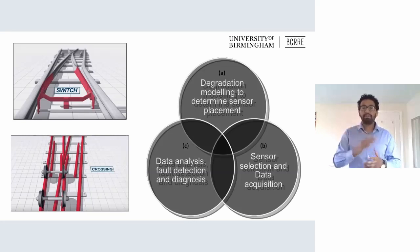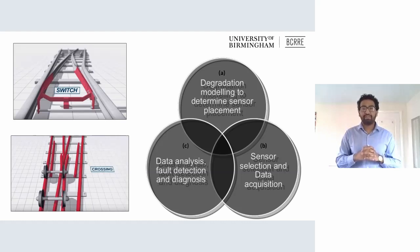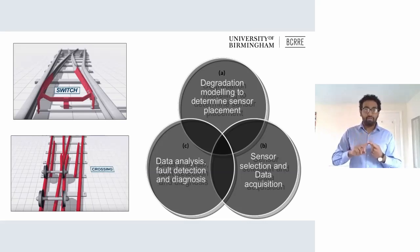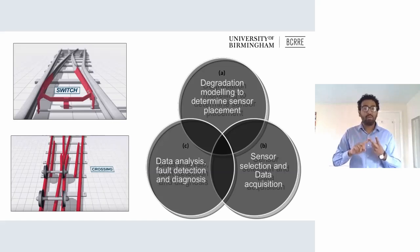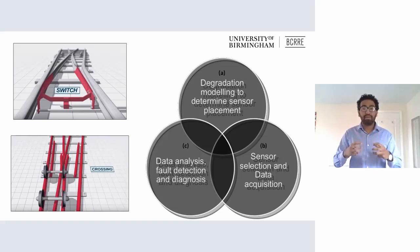As you can see on the Venn diagram on my slide, my research comprises three different aspects. The first aspect is to carry out numerical simulation of vehicle and track in order to determine the placement of sensors on them. The second is to choose the highest quality of sensors to get the best quality of data. And the third is to use that data in order to predict faults on the infrastructure.